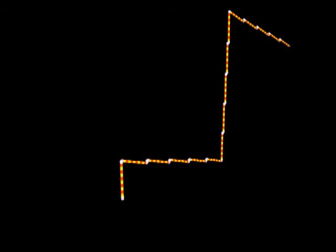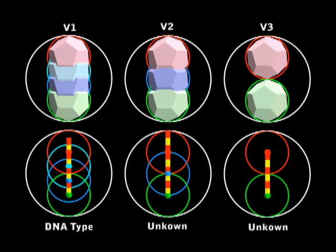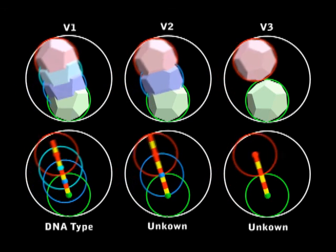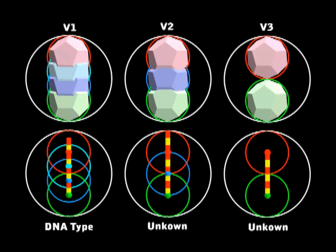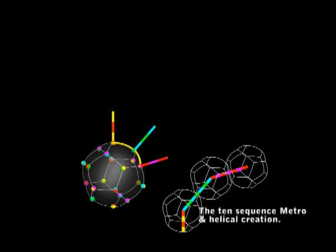This vector system works for other things other than DNA also. Let's take a look. Now look at V1 type. This is the arrangement that I use for DNA. I haven't worked on V2 type yet. But I showed the vector system similar to V3 in my last video.